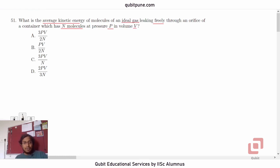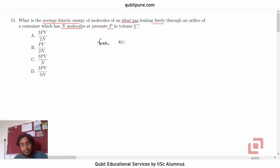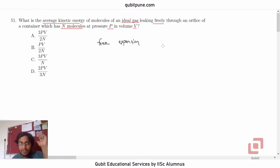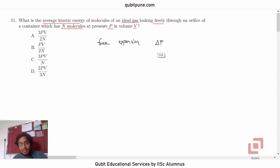We have to first understand that this is a thermodynamic process of free expansion, where the work done, heat exchanged, and the internal energy all remain constant. It's free expansion, so delta E is zero.